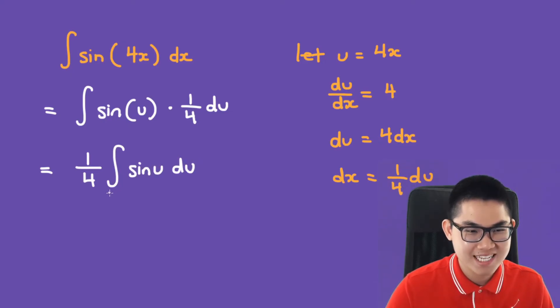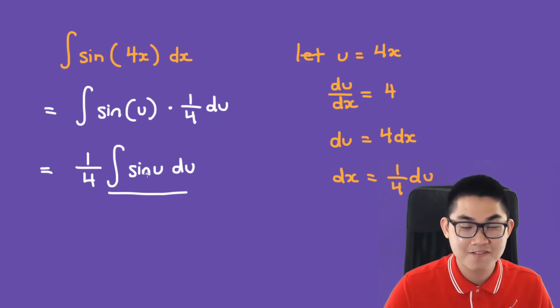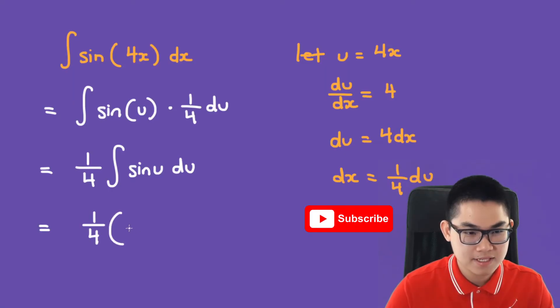Now, what is the antiderivative of sine? It is going to be negative cosine. So we have 1 over 4 times negative cosine of u plus c. Which is negative 1 over 4 times cosine of u plus c.